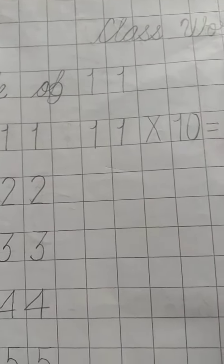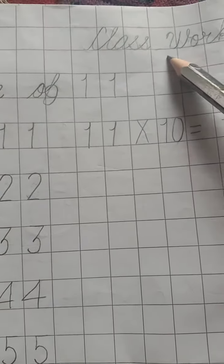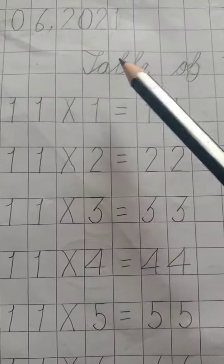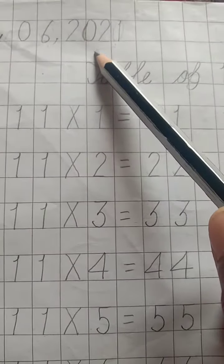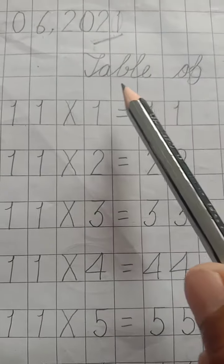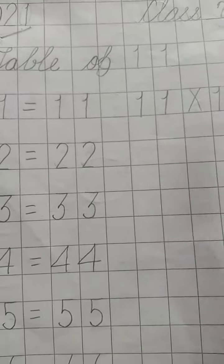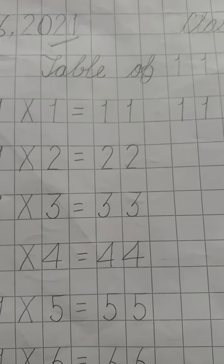Class work. 3 boxes left, write class work. In the next line, one line should be left. Downside you will write table of 11. Today we will do table of 11.